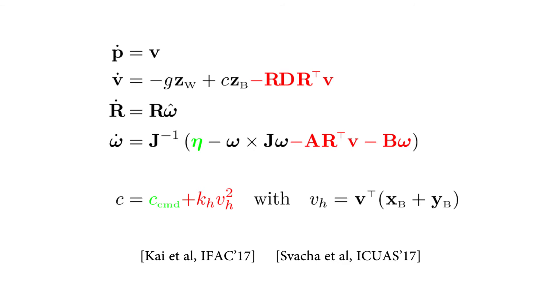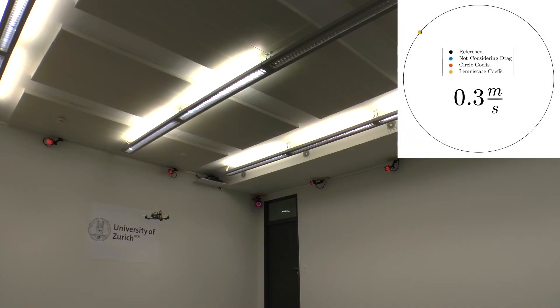So let's fly the circle again with increasing speed. In the animation on the top right you can see the reference trajectory in black, tracking without considering rotor drag in blue, and tracking when considering rotor drag with different parameters in red and yellow. With increasing speed the blue point gets farther and farther away from the reference while the red and yellow points always stay close.